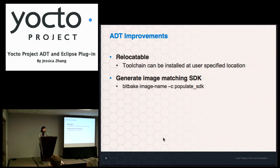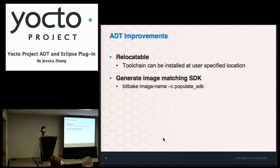For version 1.3 there are major improvements for ADT. One, as Cam mentioned, allows you to generate the image-matching SDK. The other is that the toolchain is now no longer at a fixed location — the toolchain can be installed at a user-specific location.